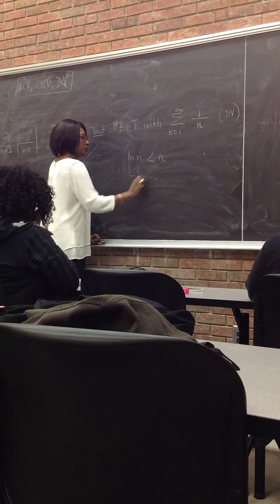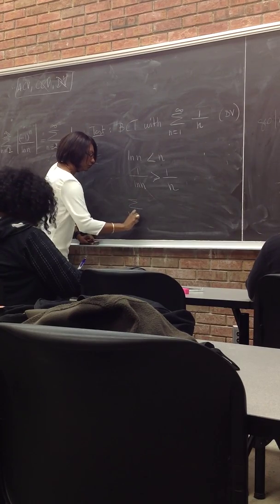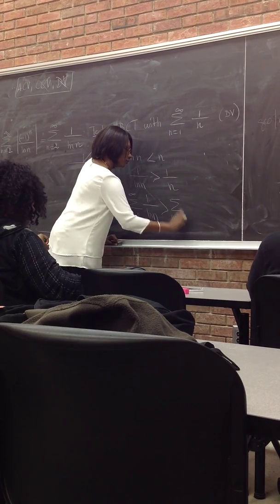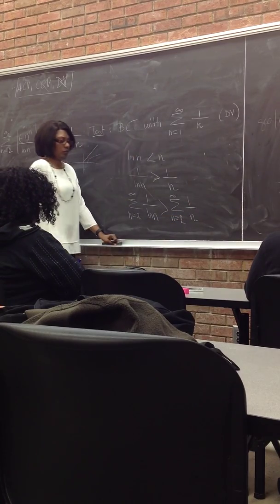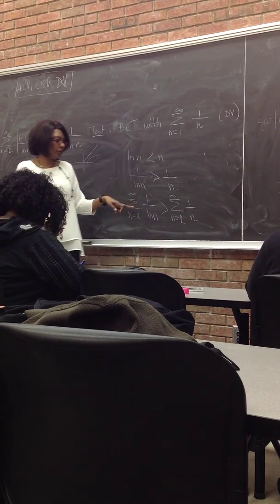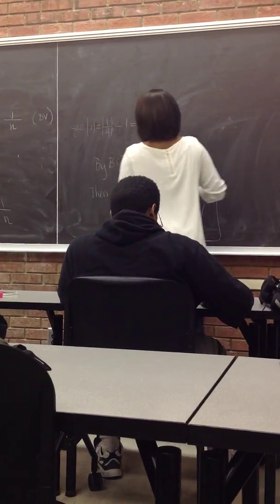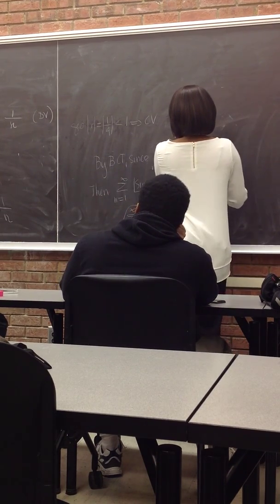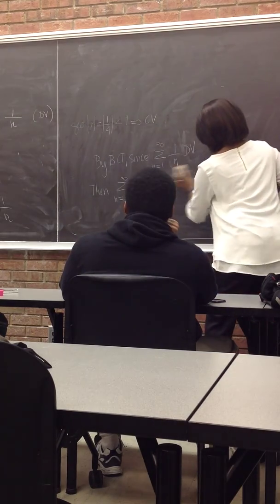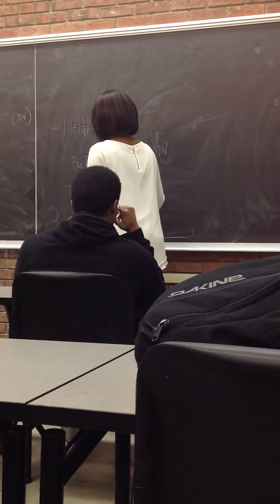So if I take the reciprocal, 1 over natural log of n is bigger than 1 over n. And then the summation would be greater than 1 over n. So now we're doing BCT. We know something about this one. It diverges. And that's a smaller one. If the smaller one has an infinite sum, then of course, the bigger one has an infinite sum. So here, by BCT, since 1 over n diverges, then the summation absolute value of n to the n over natural log of n diverges.